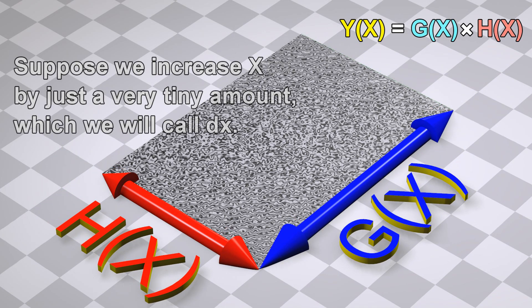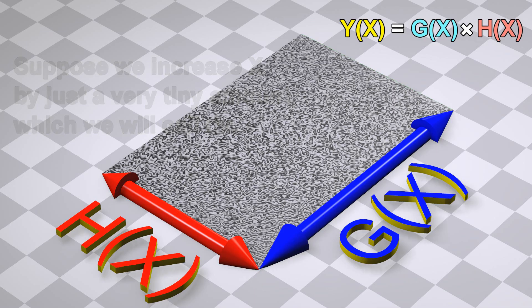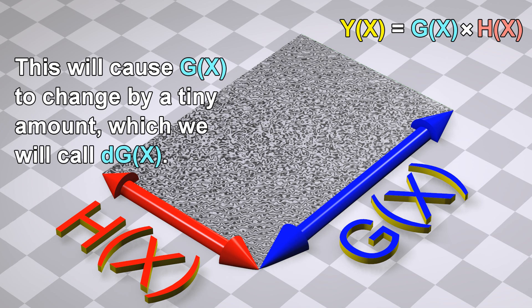Suppose we increase x by just a very tiny amount, which we will call dx. This will cause g to change by a tiny amount, which we will call dg.